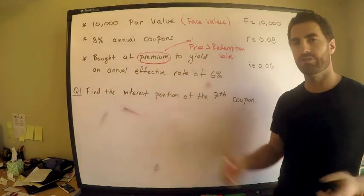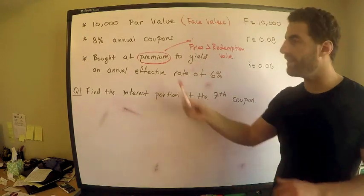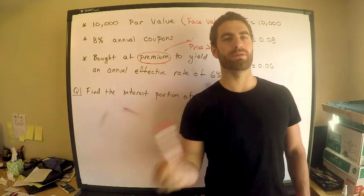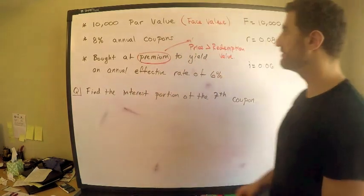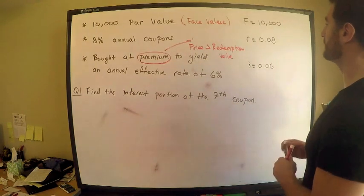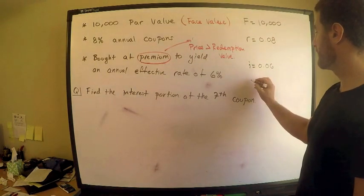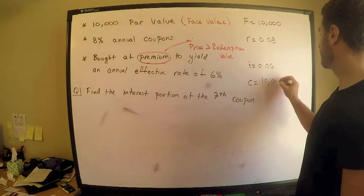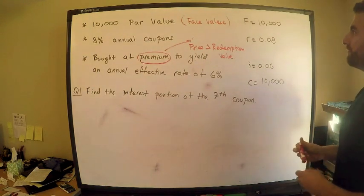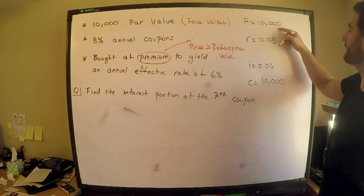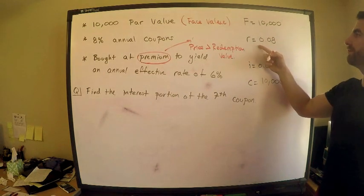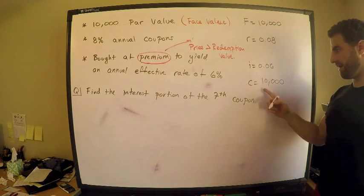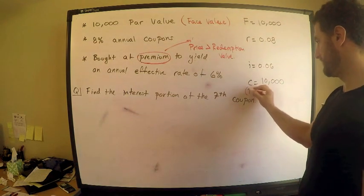So what is the redemption value? We use notation C for this. When the SOA says nothing about the redemption value, you assume it's the same as the par value. So capital C, the redemption value, is also 10,000. So we have the par value, the effective interest rate, and the redemption value C equals 10,000.